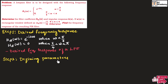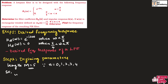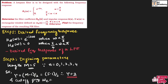Step 2 is to define the parameters. We are designing a FIR filter with length M equal to 5. Since n ranges between 0 to 4, n can take the values 0, 1, 2, 3, and 4 — giving 5 values. Therefore the filter length M equals 5. We can write tau equals M minus 1 divided by 2, which equals 5 minus 1 divided by 2, so tau equals 2. The cutoff frequency omega c equals pi by 4.